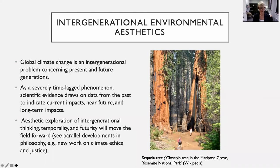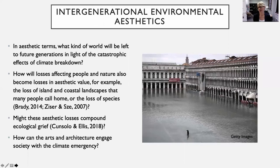I have here a sequoia tree from Yosemite because, to me, it is almost a symbol of intergenerational thinking — intergenerational experience and aesthetics in the natural world. These magnificent trees span generations of human beings, span generations of indigenous and settler peoples, and they are really magnificent. And here an image of closer to home for all of you — Venice. In aesthetic terms, what kind of world will we be leaving to future generations in light of the catastrophic effects of climate breakdown? What world will we be leaving to them in an aesthetic sense?